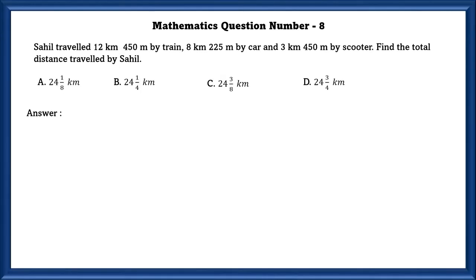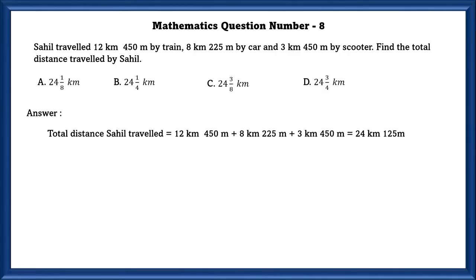Sahil traveled 12 kilometers 450 meters by train, 8 kilometers 225 meters by car, and 3 kilometers 450 meters by scooter. Find the total distance traveled by Sahil. Adding all distances, the total distance traveled by Sahil is 24 kilometers 125 meters. We can express this as 24,125/1,000 kilometers or 24 and 1/8 kilometers.